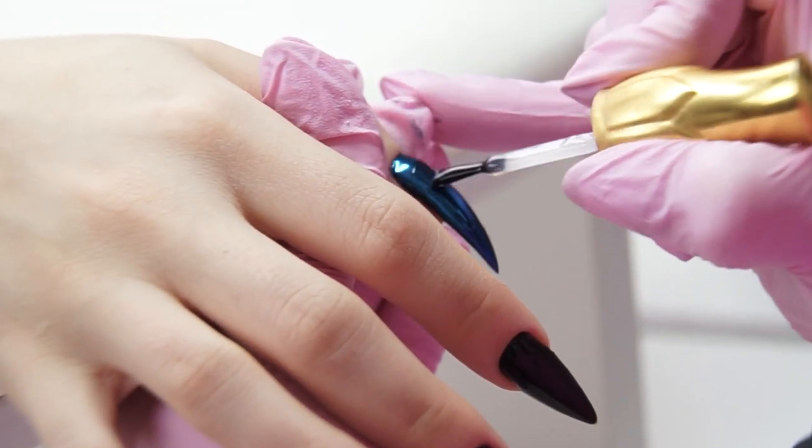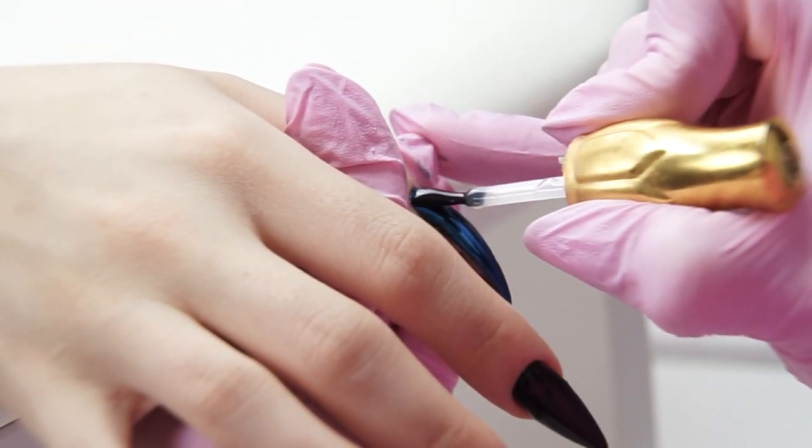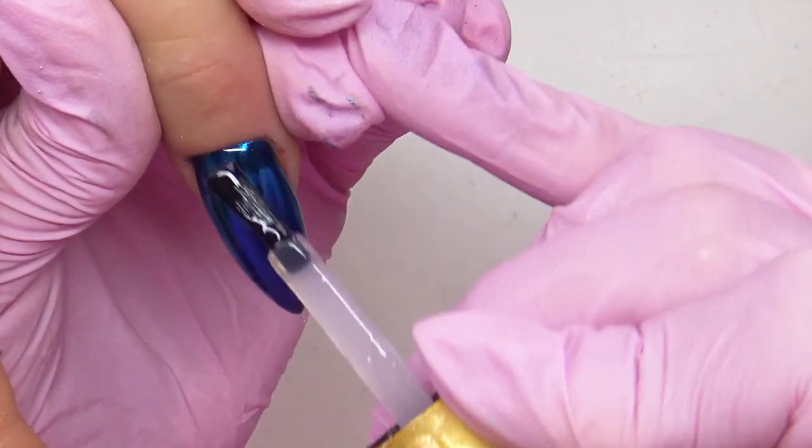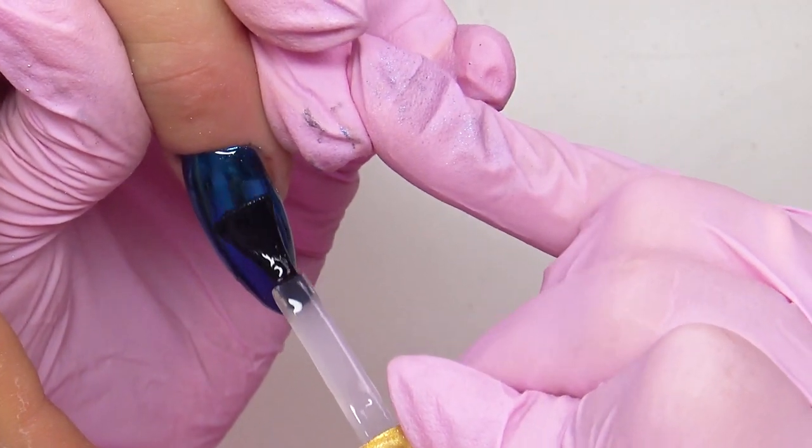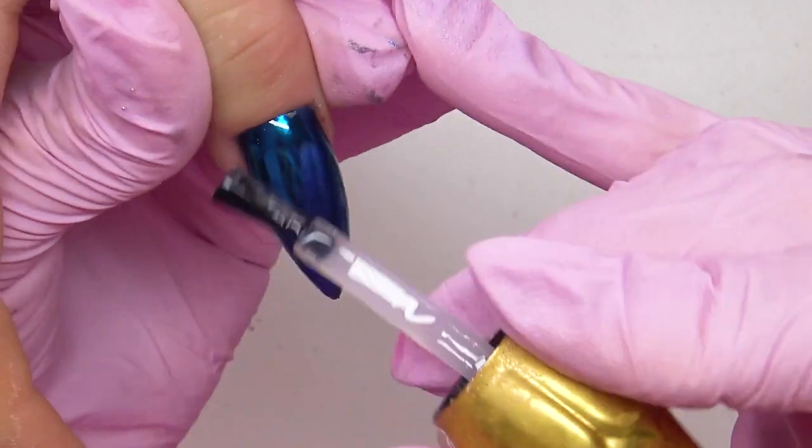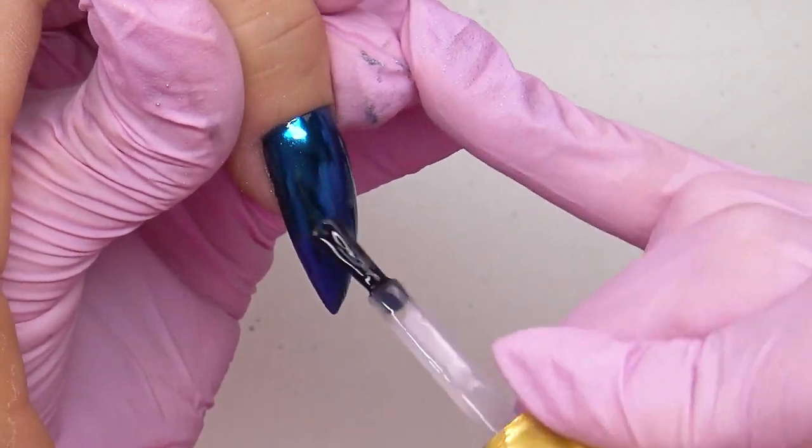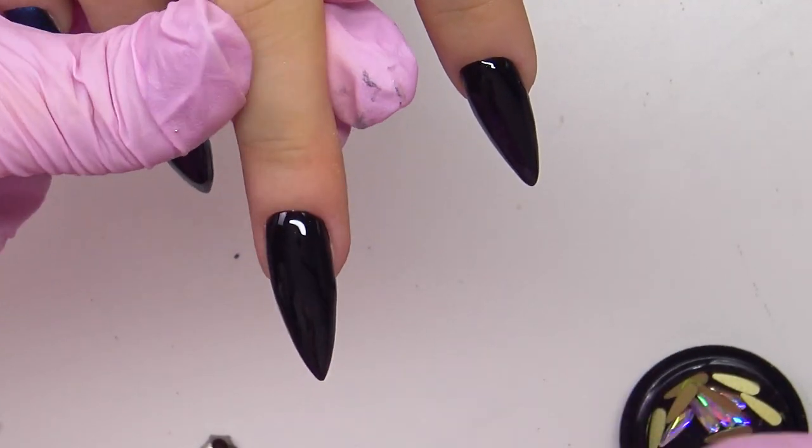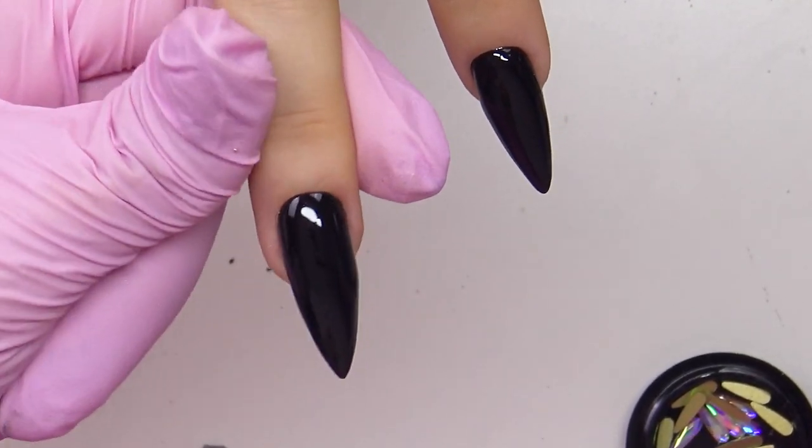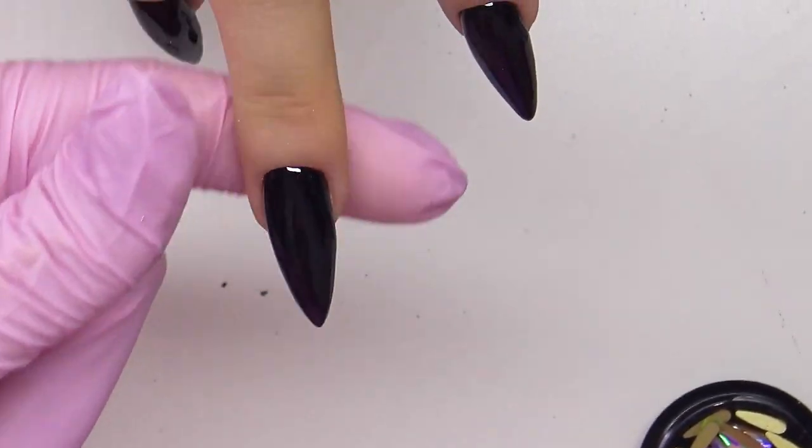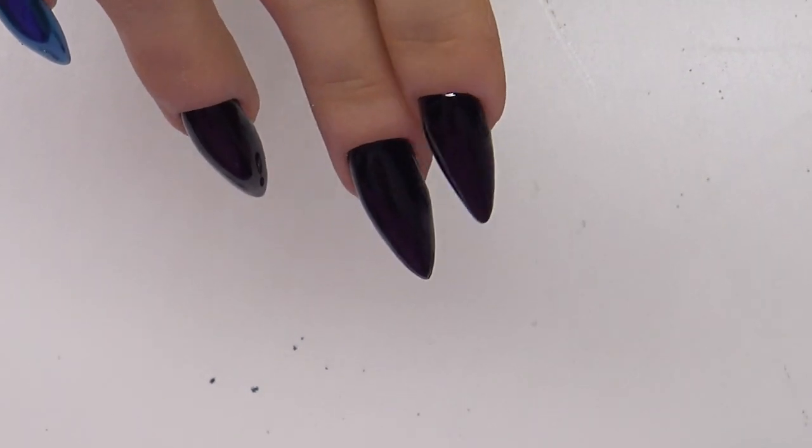Now we will cover the nail powder with a non-tacky top. On the middle finger there will be an incrustation, so I don't cover it. I will stick some rhinestones onto the same base that I was using at the beginning.